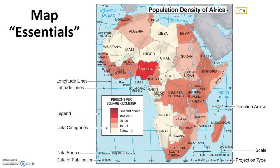First, the title. Titles briefly note a map's content and purpose, and it helps ensure that a map is not misused. Next, the map date. This shows the date of publication. It would also be useful to have the date of the data collection. Just because a map was published on a certain date doesn't necessarily mean that the data was from that date as well. So some maps actually show publication dates and data collection dates.